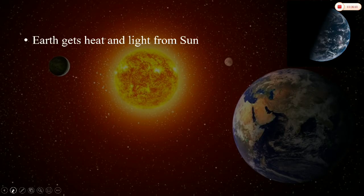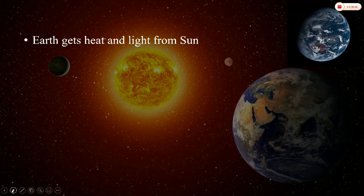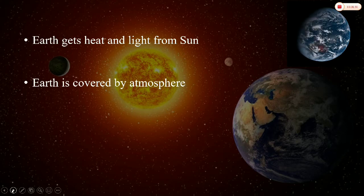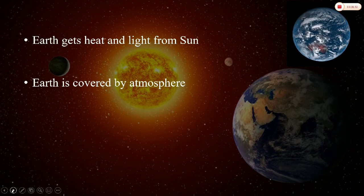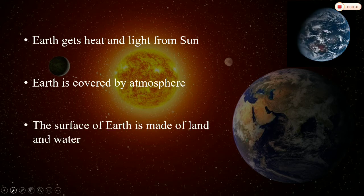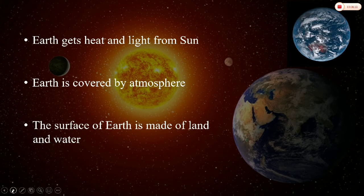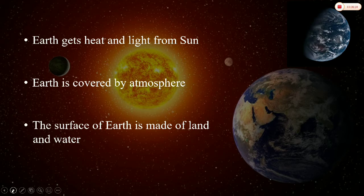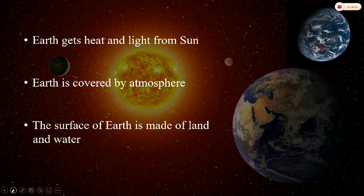The Earth gets its heat and light from the Sun. A layer of air called the atmosphere surrounds the Earth. The Earth is covered by a layer of atmosphere. The surface of the Earth is made up of land and water. About three-fourths of the Earth is covered with water and one-fourth by land.